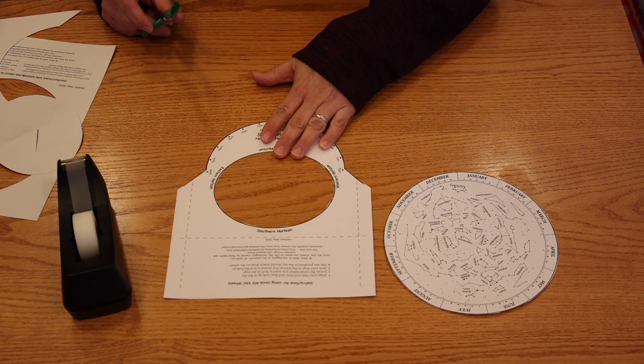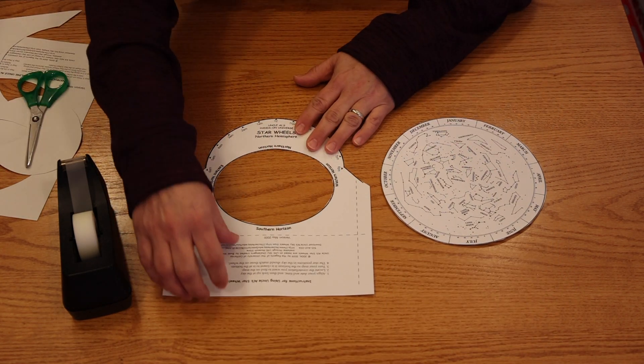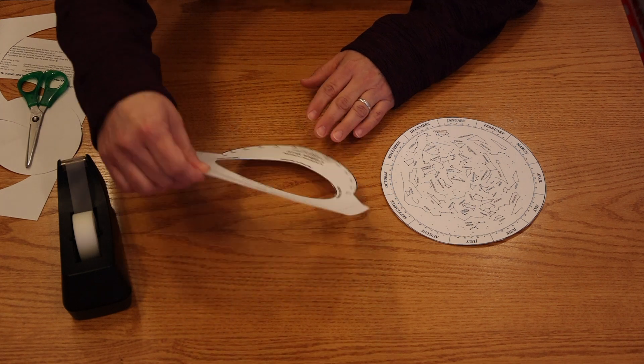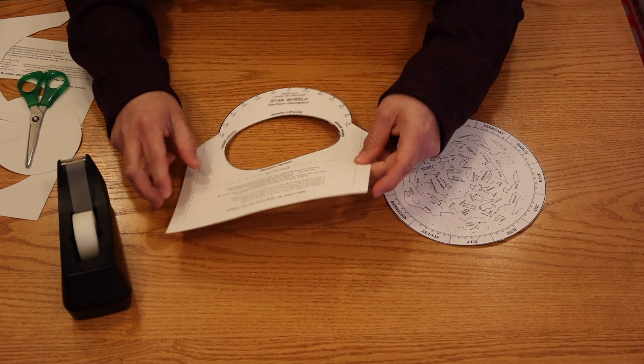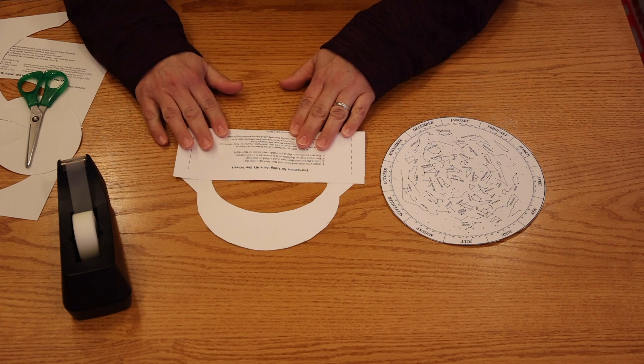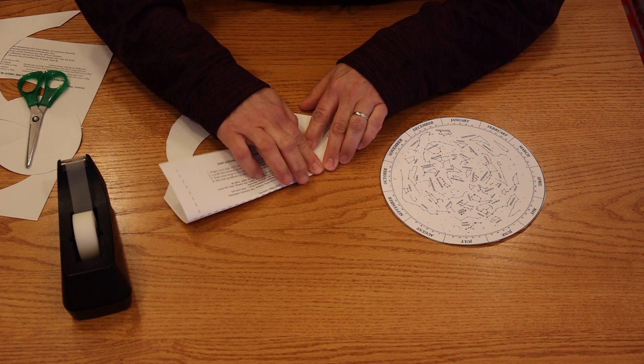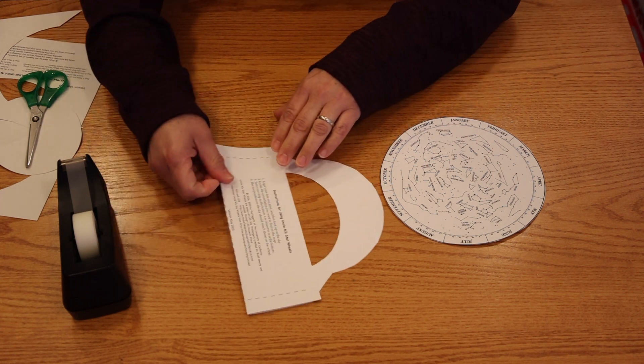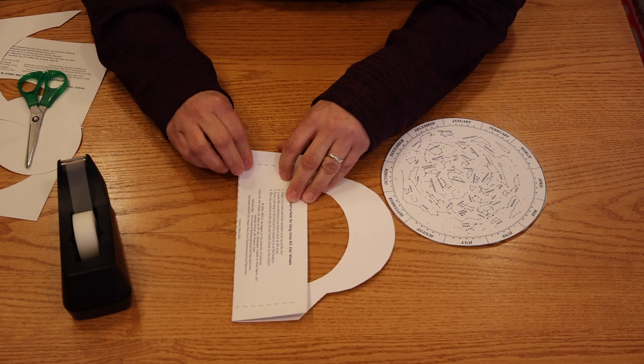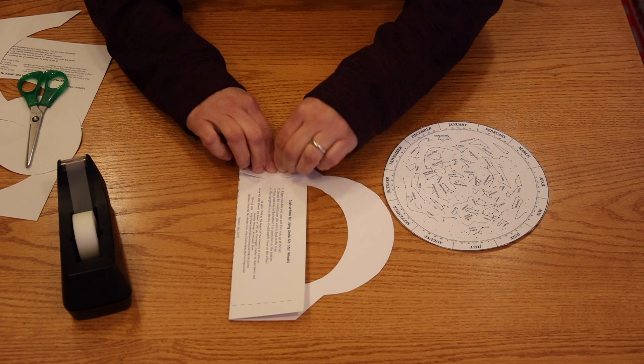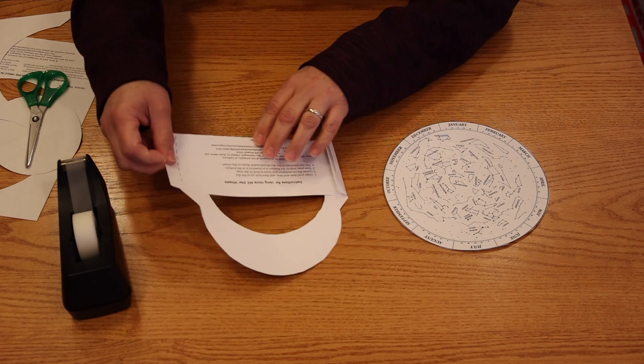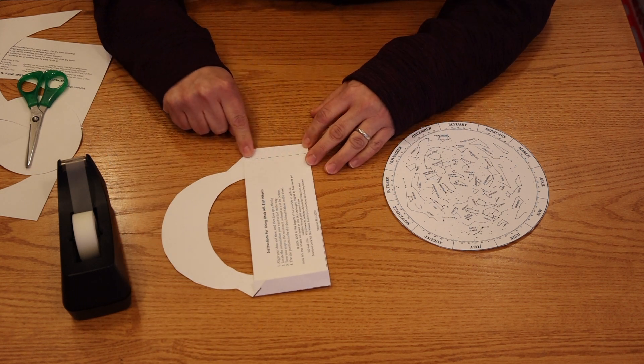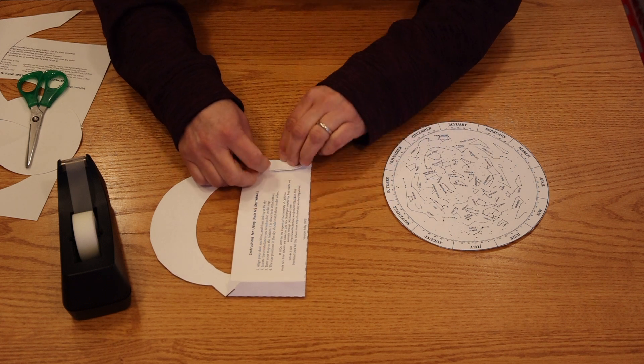Now let's put it together. Start by folding it along the dashed lines. First, the dashed line under the southern horizon. Fold the paper nice and straight and then press down on your fold to get a good stiff crease. Next we fold the sides. Again, right along the dashed lines, nice and straight. And since this is now two sheets thick, you really got to push down hard on it to get a good stiff crease.